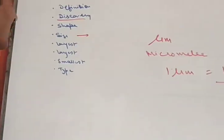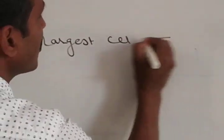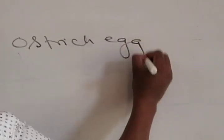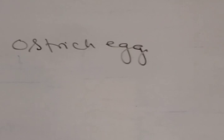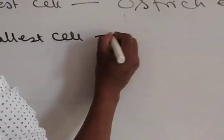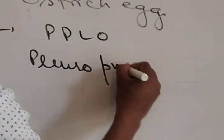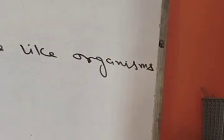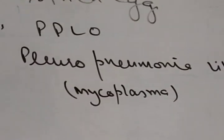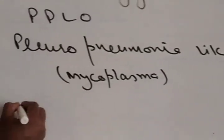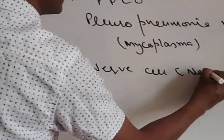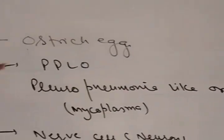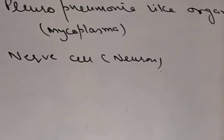Then we come to the largest, longest and the smallest cell. The largest cell that we know so far is ostrich egg. Then we come to smallest cell. Smallest cell is PPLO, which stands for pleuro-pneumonia-like organisms. Also called as mycoplasma. They are smallest cell of the world. And then the longest cell is nerve cell or the neuron is the longest cell.